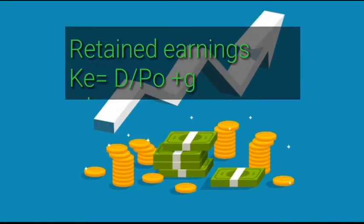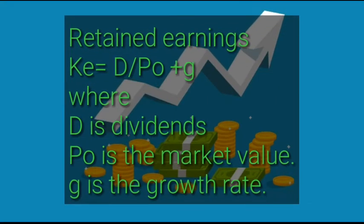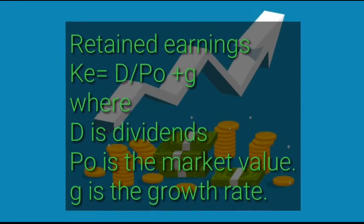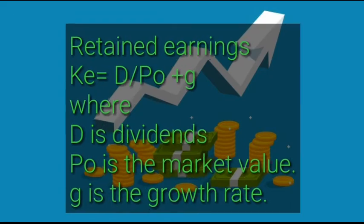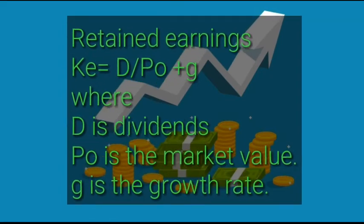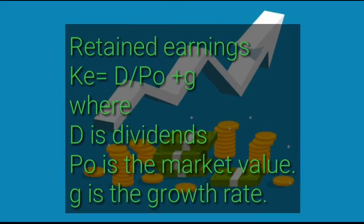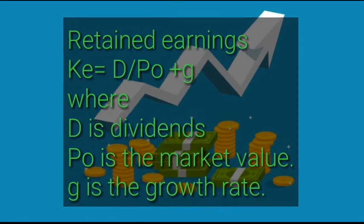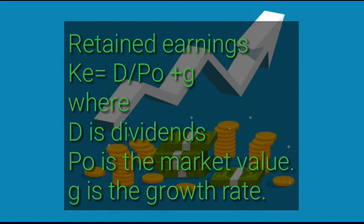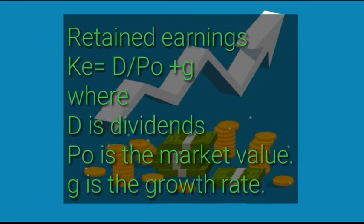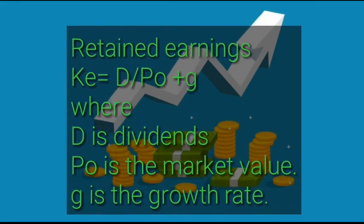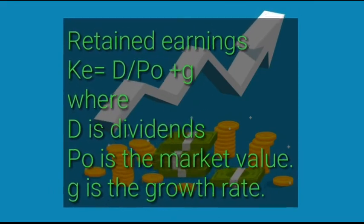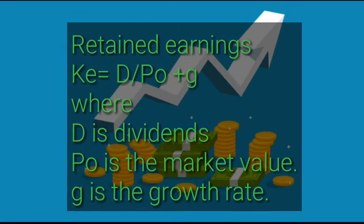Under equity we also have retained earnings, and the formula for the specific cost of retained earnings is: d divided by p-naught, plus g, where d is dividends, p-naught is the market value, and g is the growth rate.